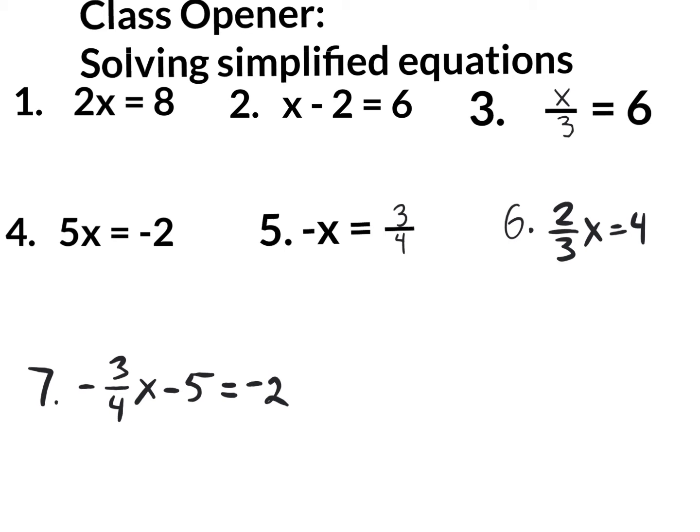Let's begin with number one. Number one reads 2x equals 8. We could think about this in our heads — two times a number equals 8, what's the number? Four. But I want you to practice getting rid of things by doing the inverse operation. When you see 2x, that really means 2 times x, and the way to get rid of the multiplication of 2 in front of x is to do the opposite, which is division.